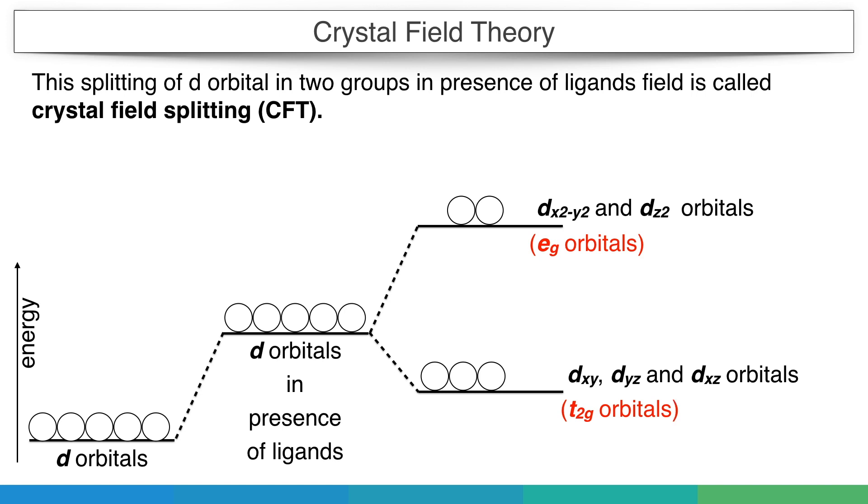In next videos, we will only use these names for the d orbitals, so please try to remember them properly. The difference in energy between the two sets of d orbitals is measured in terms of a parameter called delta, where the total energy split is 10Dq.